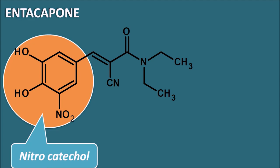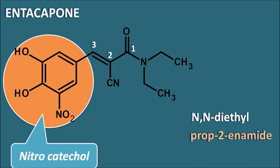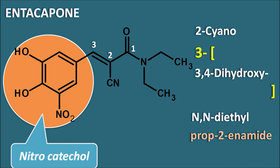To name entacapone, we identify the principal functional group as the amide and start the numbering from the amide: 1, 2, and 3. It is having the propanamide, but it has a double bond at the second and third position, so it can be represented as 2-propenamide. At the nitrogen, it has a diethyl group — N,N-diethyl. At the second position, a cyano group is present. At the third position, the nitrocatechol moiety is present, which is represented as 3,4-dihydroxy-5-nitrophenyl, just like in tolcapone. That is the complete name of entacapone.